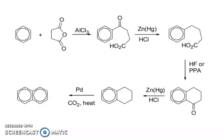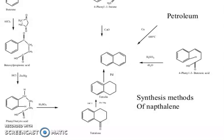Another synthesis of naphthalene: in the presence of AlCl3, then zinc amalgam, HCl, then cyclization in the presence of HF or PPA, then zinc amalgam reduction, then palladium/CO2 heat oxidation. Starting from benzene, you get these products, using sulfuric acid, tetralone, and then palladium. Synthesis routes include: from petroleum, from 4-phenyl-2-butenoic acid, and from 4-phenyl-1-butene.